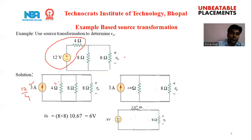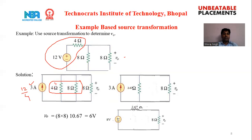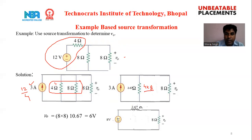The 4 ohm resistance is connected in parallel. In this circuit, the parallel combination of 4 ohm and 8 ohm is replaced by a single resistance. That resistance equals 4 times 8 divided by 4 plus 8, giving 4 times 8 divided by 12, which equals approximately 2.67 ohm.